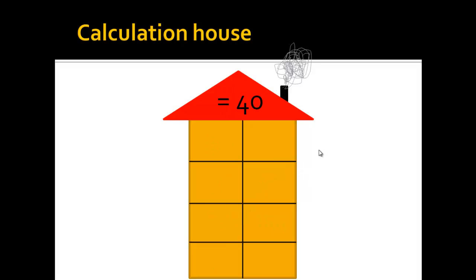Another kind of calculation house is one where the result is shown in the roof, and each level shows a calculation that should result in the number above in the roof.